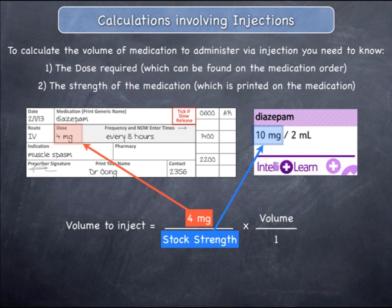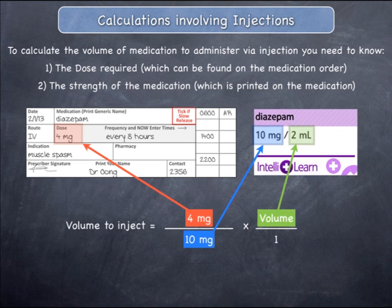The stock strength can be found in the concentration of the medication. It is the first numerical value before the backslash sign — in this case, it is 10 milligrams. The volume can also be found in the concentration of the medication. It is the numerical value after the backslash sign and is always specified in mils. In this case, it is two mils.